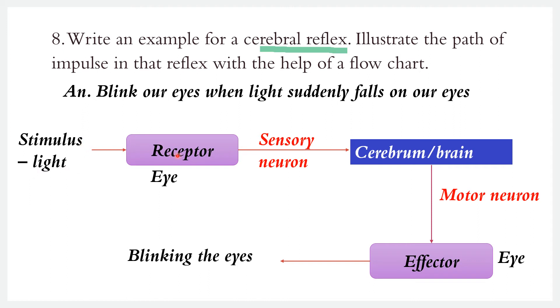This is the receptor. The message travels via the sensory neuron. The brain receives the signal — this is the cerebral reflex pathway.